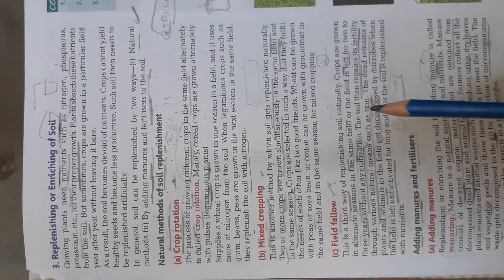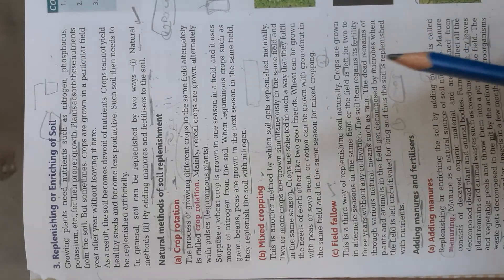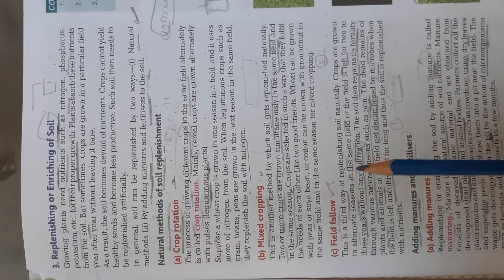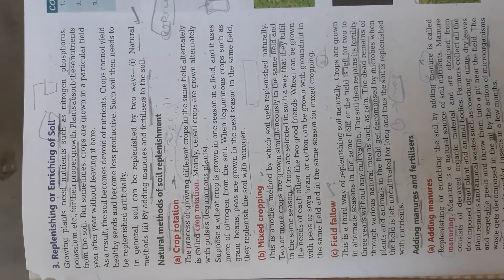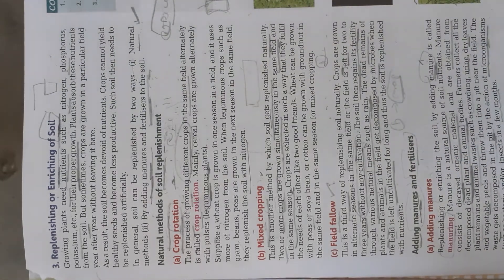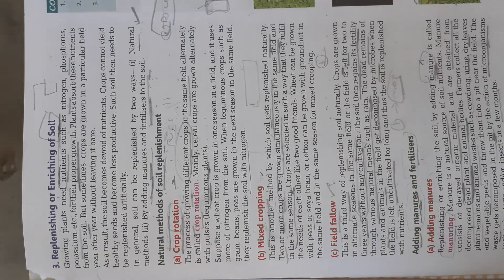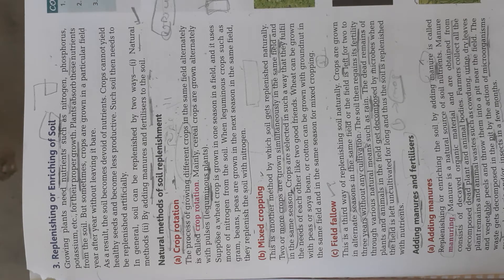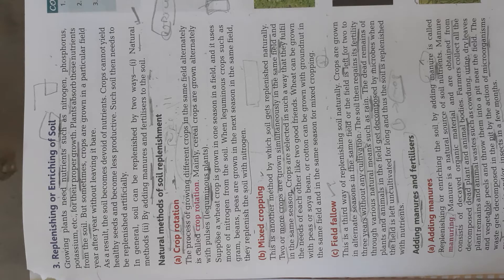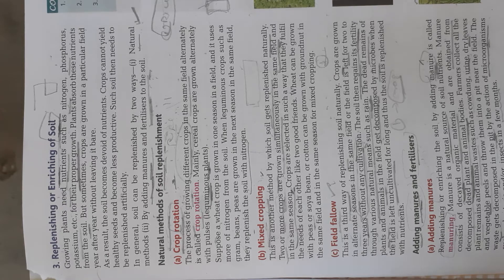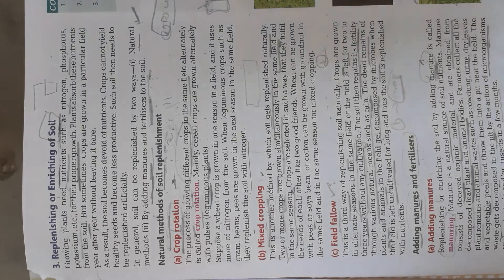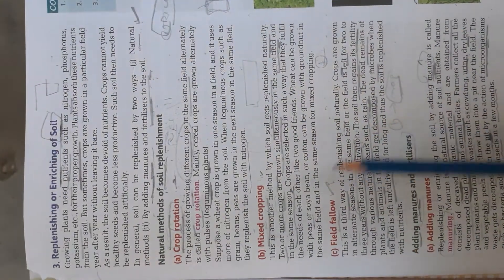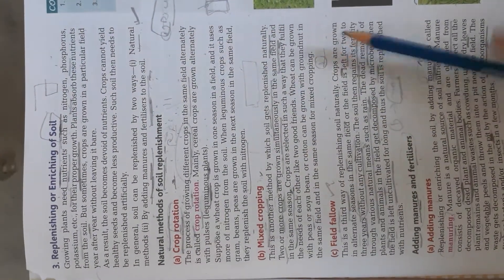Then we discuss field fallow. Field fallow: at one time only one type of crop is grown and the land is left over for several months, due to which decomposition of organic material takes place with the help of bacteria and the soil gets nourished. We covered all the topics, I am just revising you.